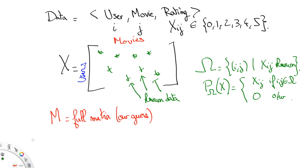The difference P_omega(M) - P_omega(X) is then a measure of the difference between the matrix M and the data we were given.